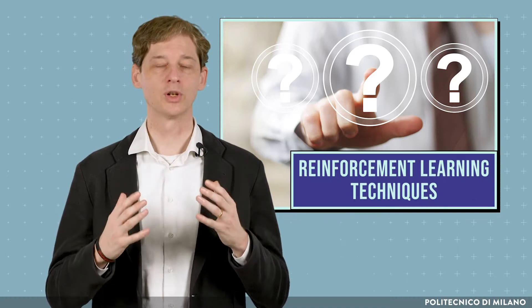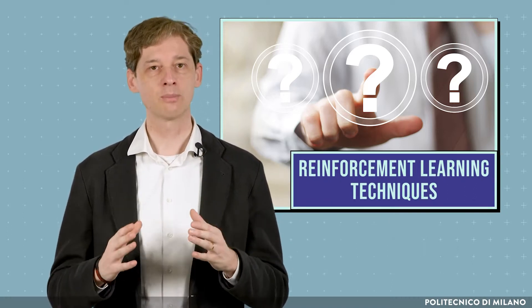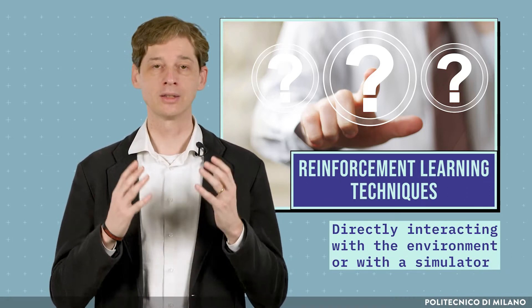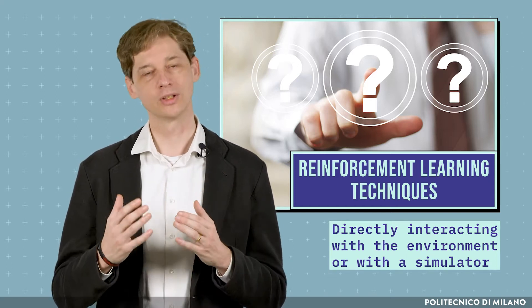Very often, in the real world, when we have to solve decision-making problems, we have little or no knowledge of environmental dynamics. In other cases, even if we have good state transition models, when the number of state indexes is too large, we can't solve these problems by means of exact methods such as dynamic programming. In all these cases, we can use reinforcement learning techniques, which are able to learn the solution by directly interacting with the environment or with the simulator.